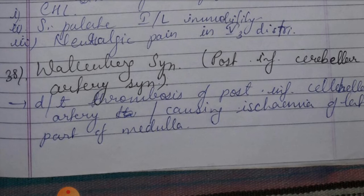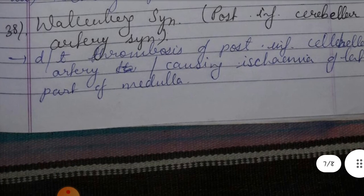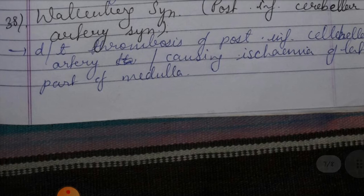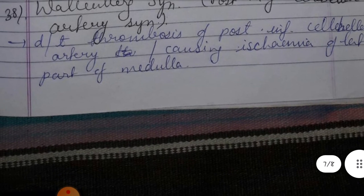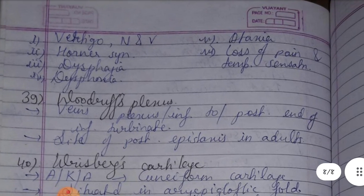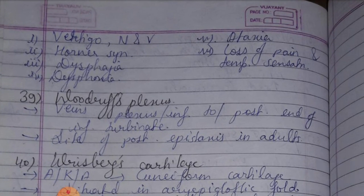Thirty-eighth is Wallenberg syndrome — called Posterior Inferior Cerebellar Artery syndrome. It involves thrombosis of the posterior inferior cerebellar artery causing ischemia of the lateral medulla. Features: vertigo, nausea and vomiting, Horner syndrome, dysphagia, and loss of pain and temperature sensation.